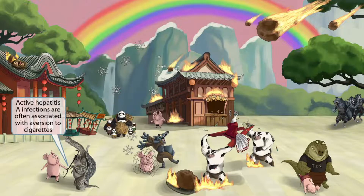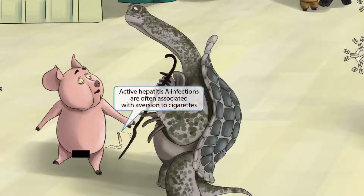Over here, we have a wise old turtle trying to help all the frightened townsfolk keep their wits about them. This pig was lighting up a cigarette to help calm its nerves. This wise turtle wouldn't let the pig do that to himself, so he smacked the cigarette right out of the pig's hands. This will help you remember that patients with active hepatitis A infections often experience an aversion to cigarettes.